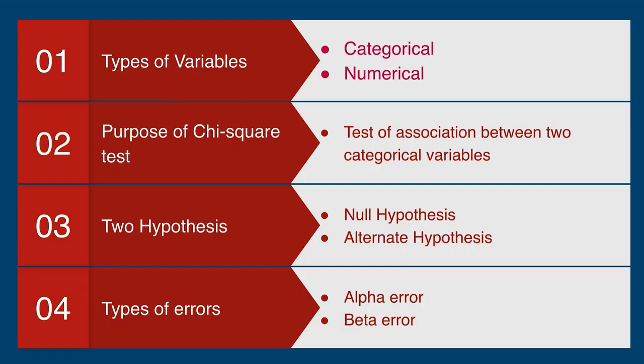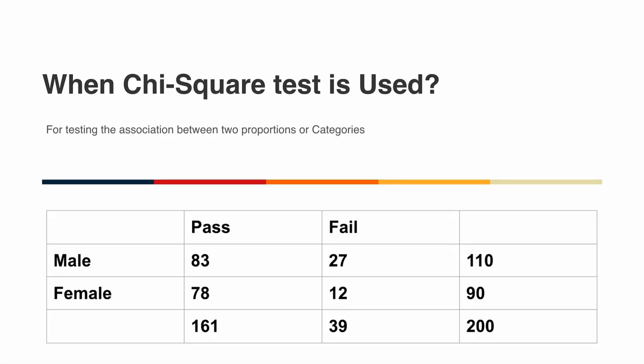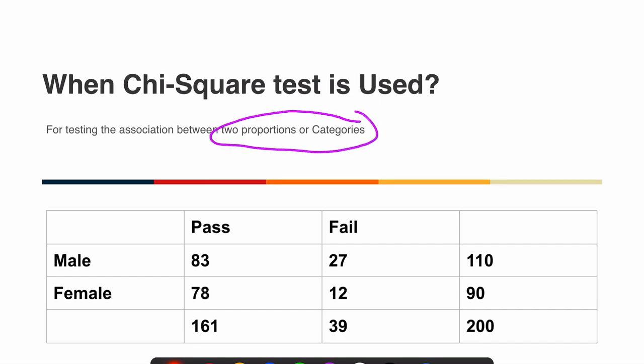To summarize the background knowledge: the type of variables — we have categorical and numerical. The purpose of chi-square test is to test for association between two categorical variables. We have two hypotheses: null hypothesis and alternate or research hypothesis. We have two types of errors, and the probability of committing the alpha error is called the p-value. With this knowledge, we move on to chi-square test calculation.